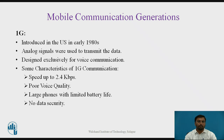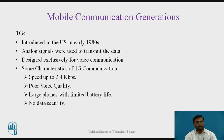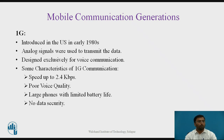Mobile communication generations — up to today, there are four generations, and the fifth generation is expected next. Starting from 1G, which stands for first generation, it was introduced in the US in the early 1980s. The duration from 1980s to 1990 is considered the first generation era. In the first generation, analog signals were used to transmit data, and it was exclusively designed only for voice communication — no text messages or videos were transferred.